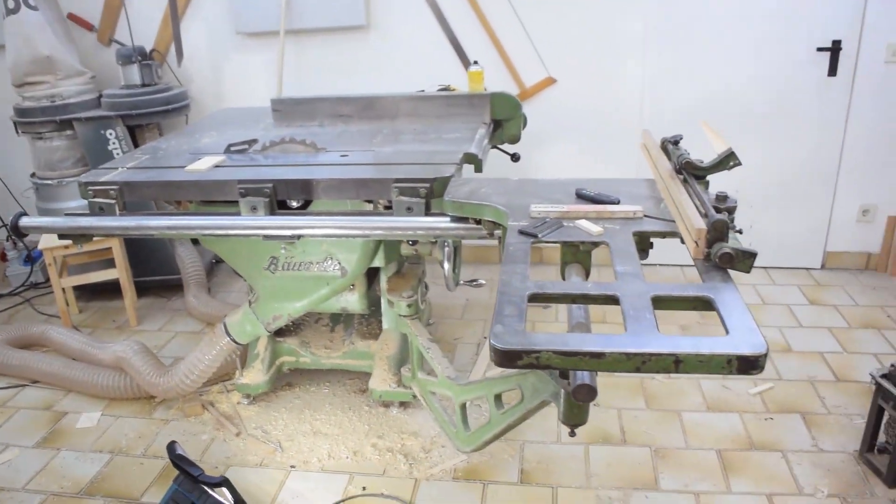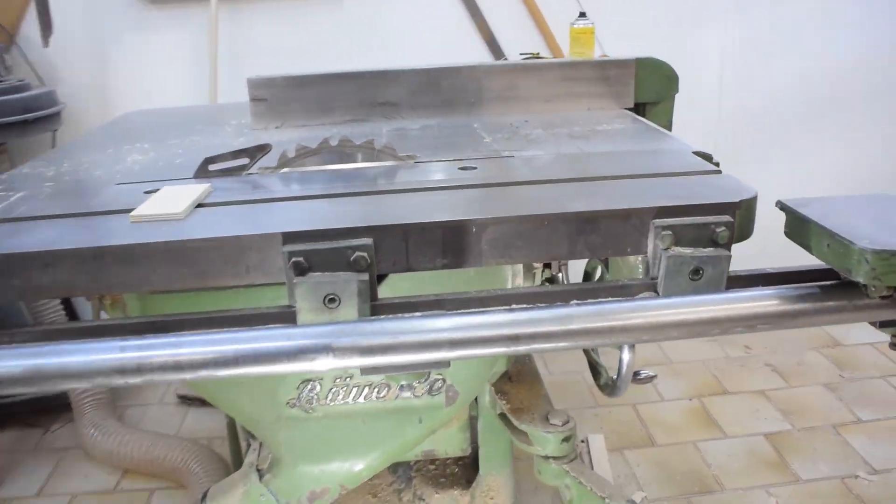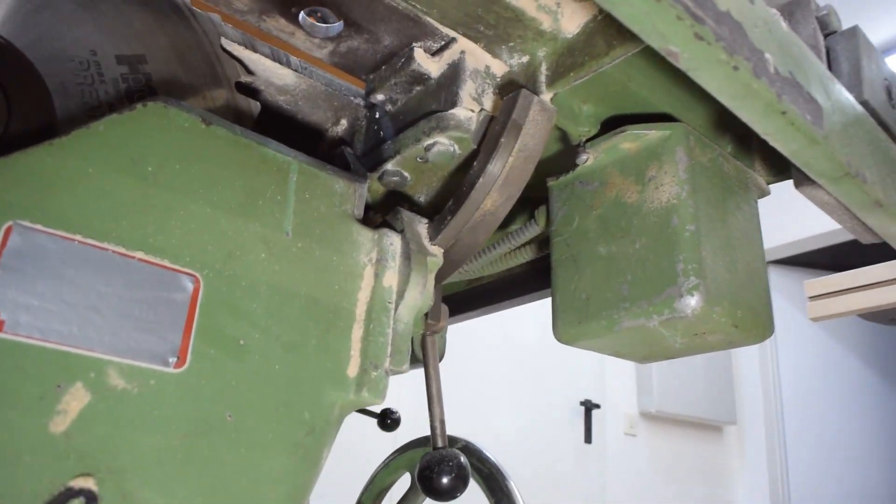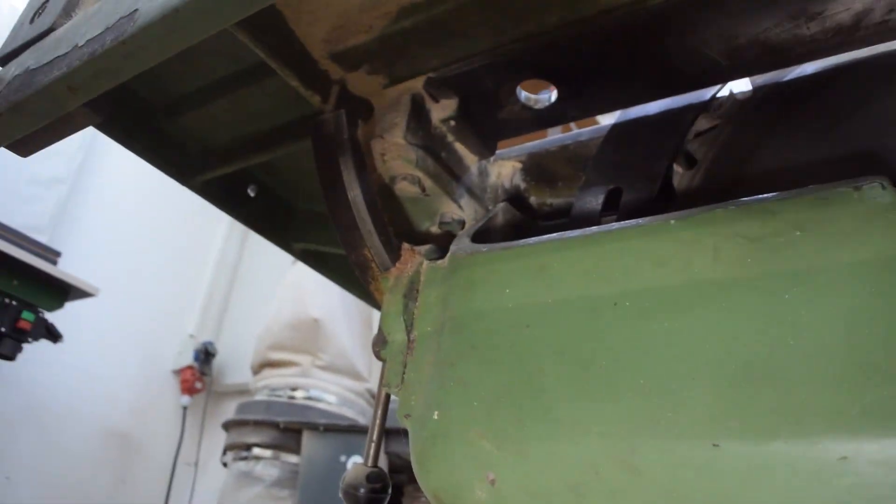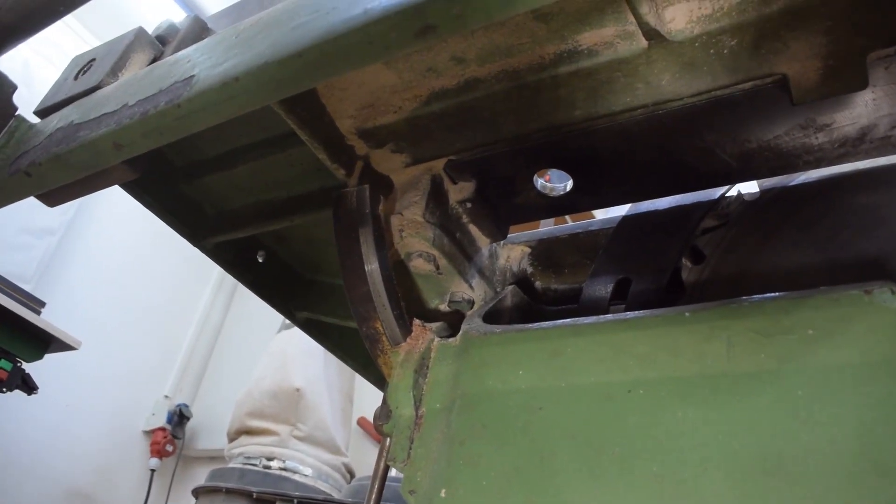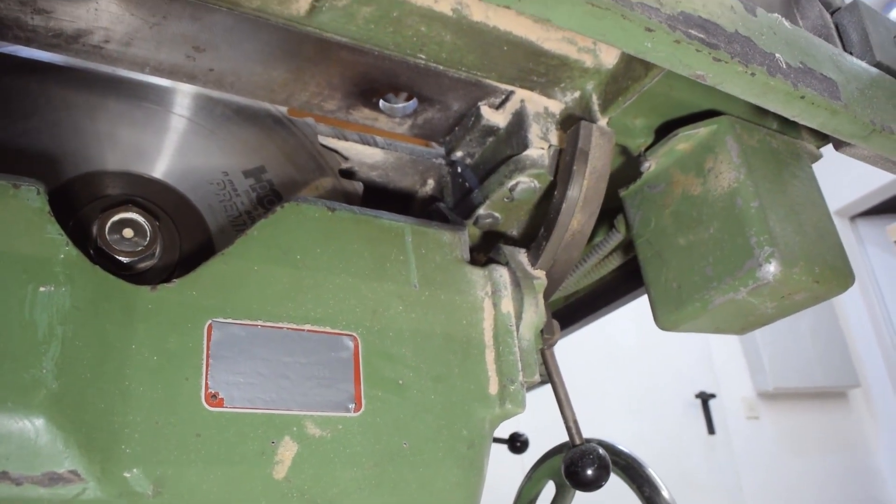Now using trunnions for tilting the arbor is basically standard in almost every table saw. Even my really old table saw from around the 60s has them. They are a rugged and tried and true concept that just works.